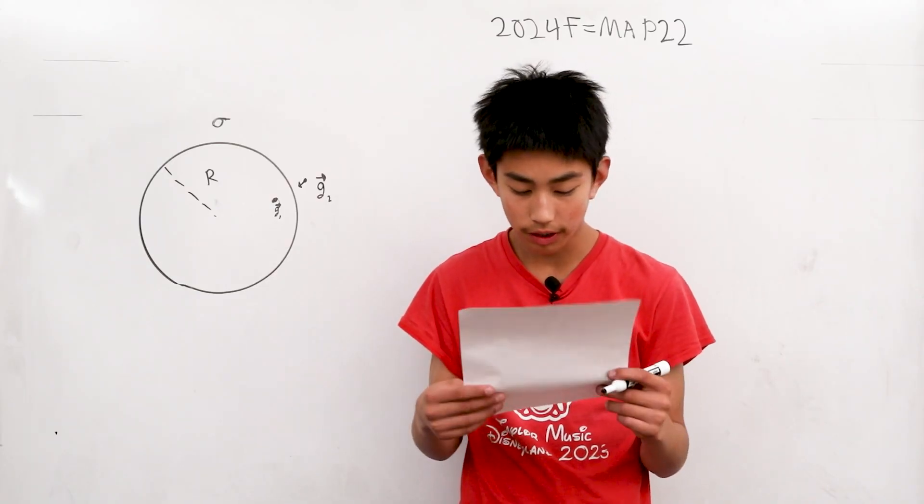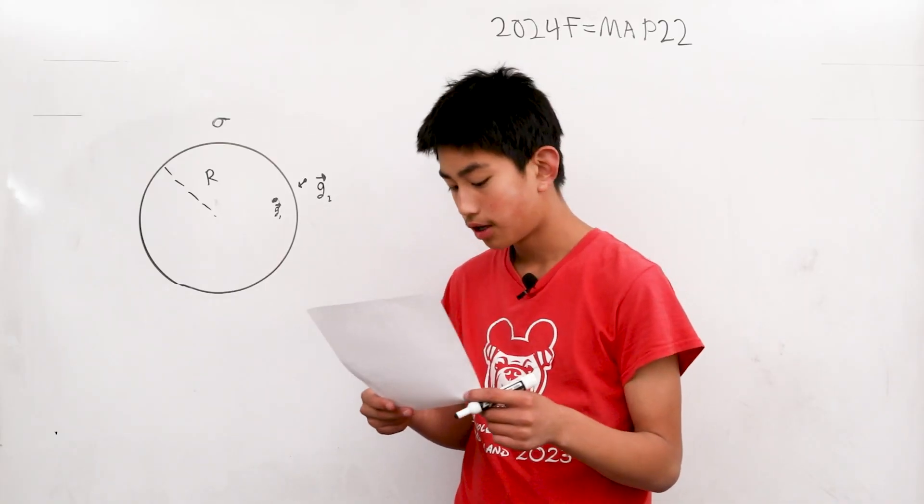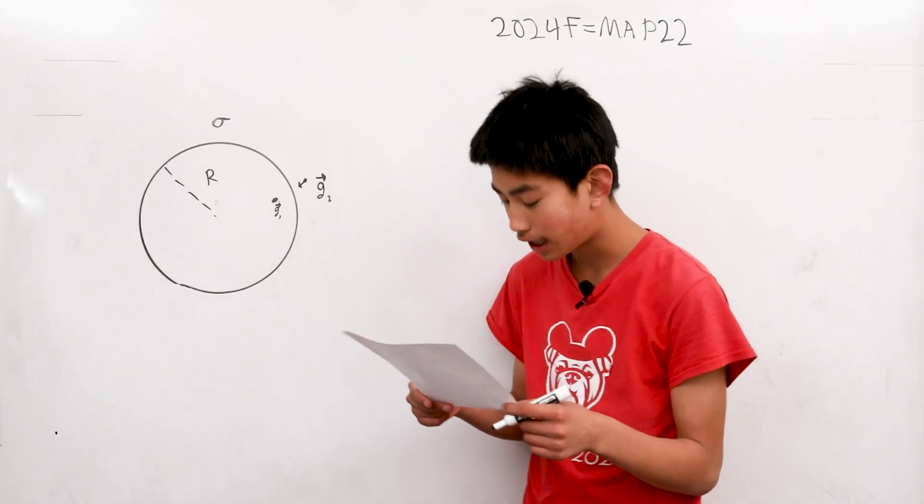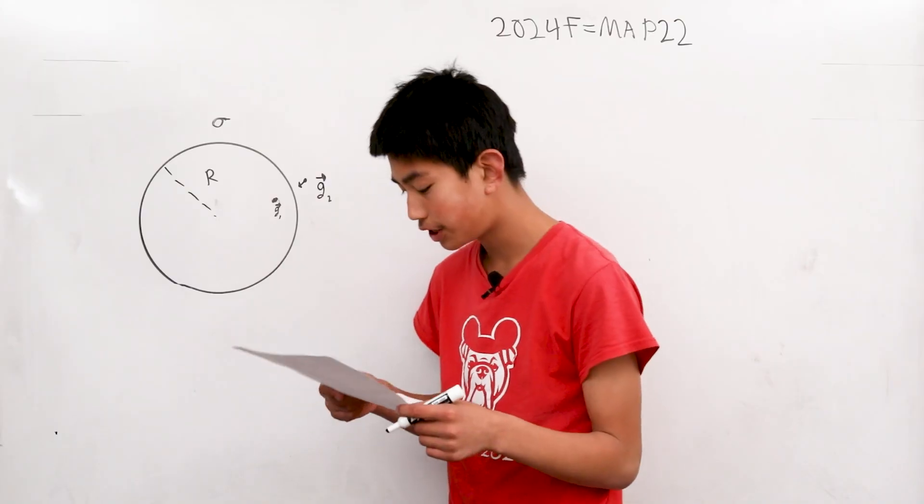If the accelerations due to gravity at these points are G1 and G2, respectively, what is the value of the absolute value of G1 minus G2?